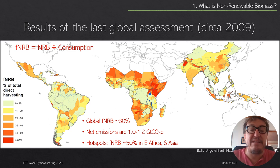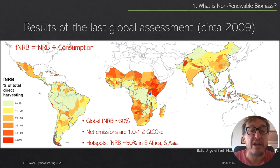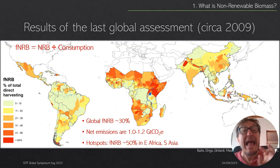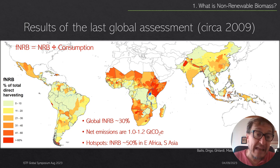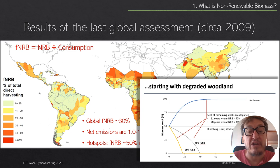This is the second global NRB assessment we have done — the first was in 2015, which was pioneering in adding a lot of geoprocessing operations not included before. However, it was still a snapshot in time — for 2009 — with some complexities in how fuel wood supply and demand are spatialized and compared, but just one point in time with no dynamics and no other drivers of change that might affect supply and demand of wood energy, like land clearing for agriculture.